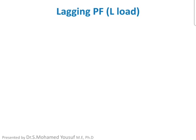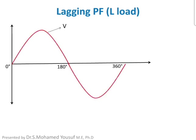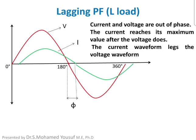Now let us see the waveform of lagging power factor. The green line shows the current waveform. Due to the inductive nature of the load, the current takes some time to start and some time to settle. The angle between the voltage and current waveforms is φ. The voltage and current are out of phase — the current waveform reaches its maximum value after the voltage waveform, so current lags the voltage.